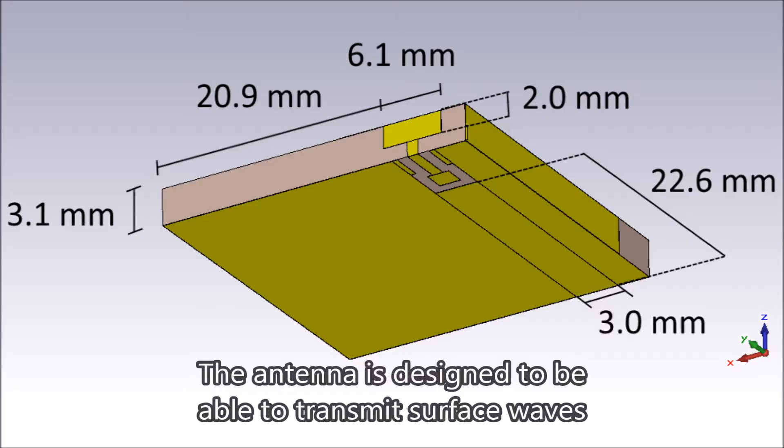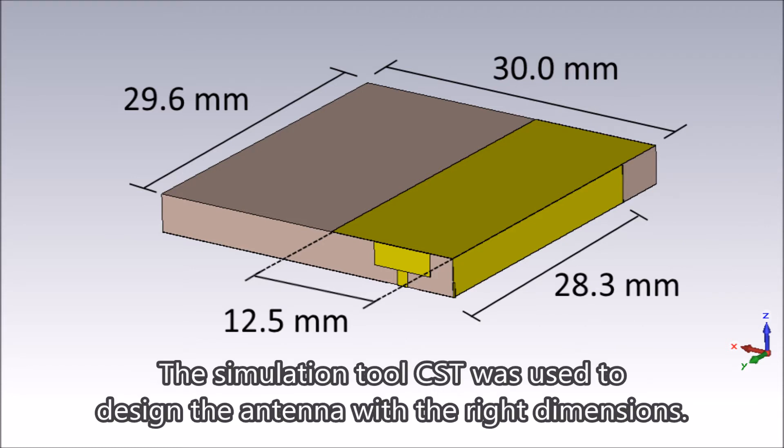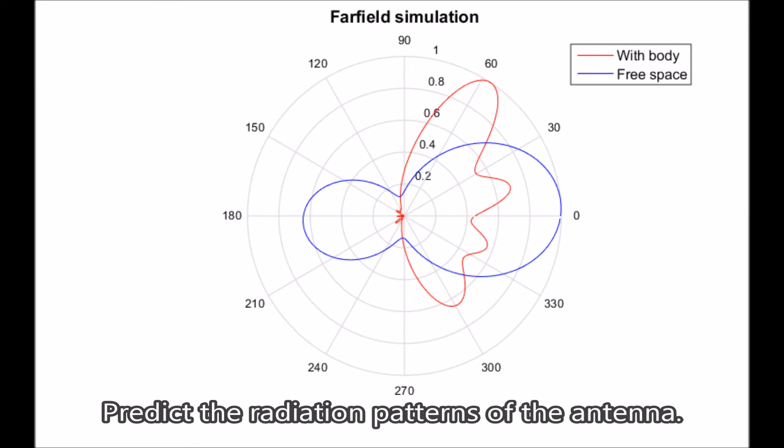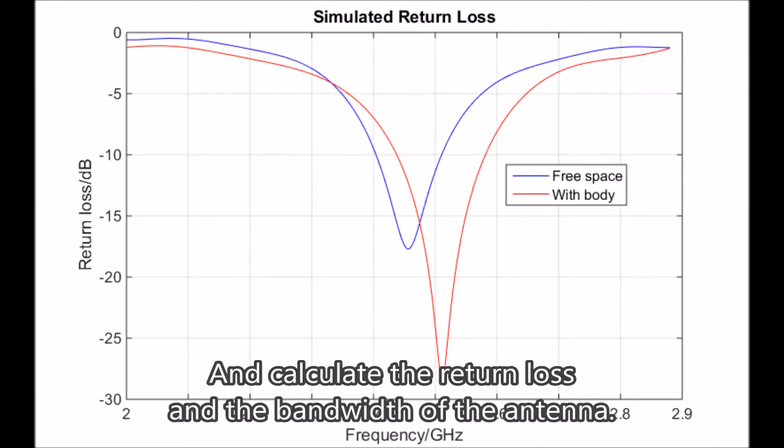The antenna is designed to be able to transmit surface waves while placed on a large dielectric load, such as your body. The simulation tool CST was used to design the antenna with the right dimensions, predict the radiation patterns of the antenna, and calculate the return loss and the bandwidth of the antenna.